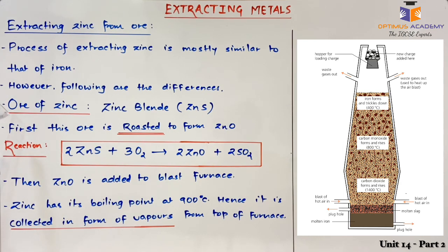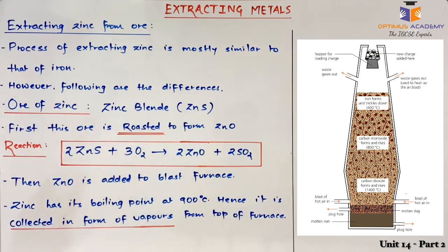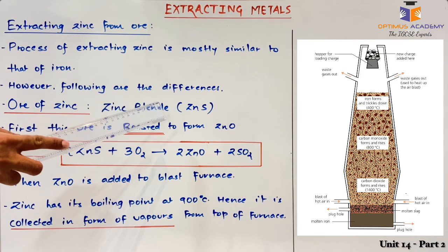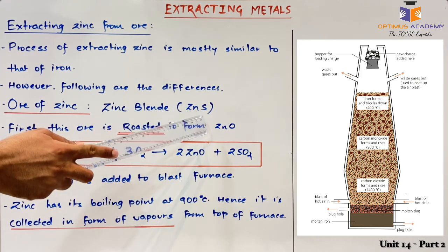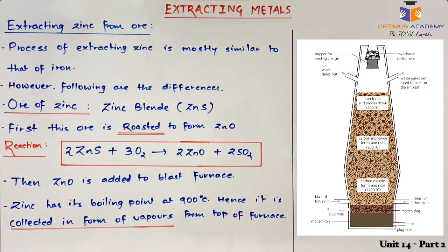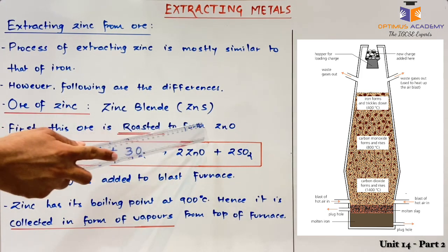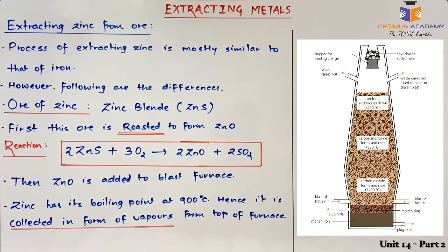First of all, the ore of zinc is zinc blende, that is zinc sulfide. Whereas the ore of iron was iron oxide. Since reducing the oxide of a metal is an easier process to extract the pure form of metal, zinc sulfide must first be converted to zinc oxide.